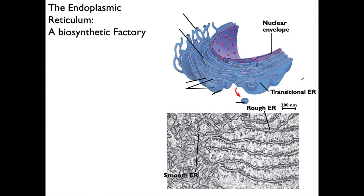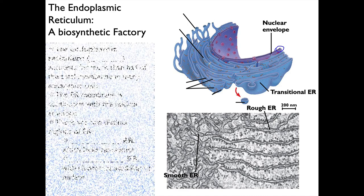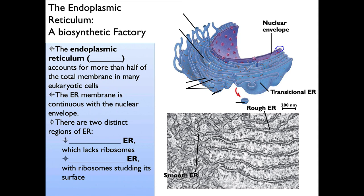Outside of the nuclear membrane — also referred to as the nuclear envelope — which has a double layer of inner and outer nuclear membrane, you're going to run into the endoplasmic reticulum. The ER is a biosynthetic factory and accounts for more than half the total membrane in many eukaryotic cells. The ER membrane is continuous with the nuclear envelope — they actually connect.